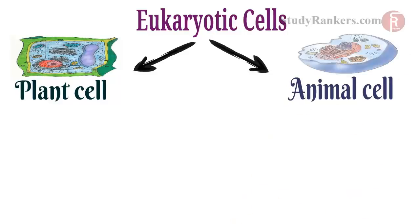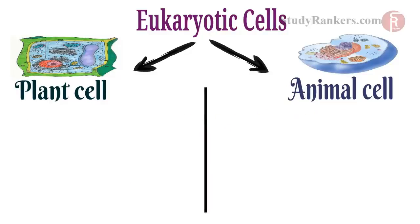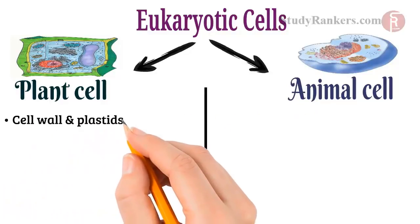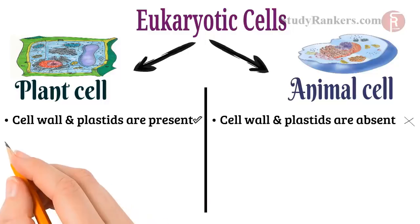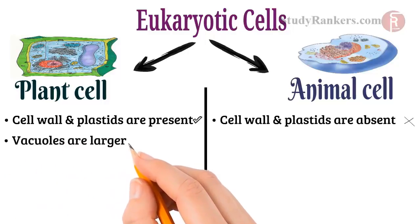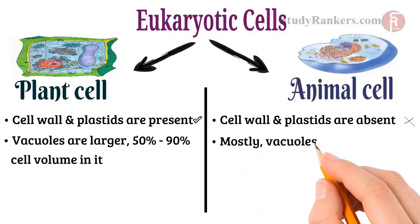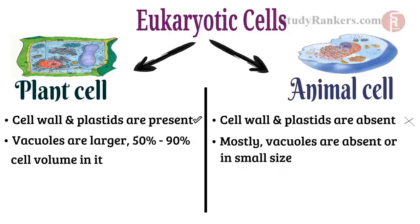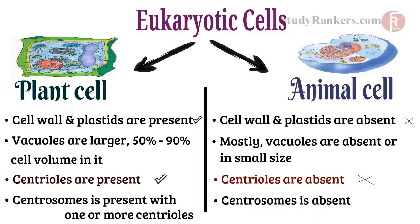Now we are going to differentiate between the characteristics of plant and animal cells. Cell wall and plastids are present in plant cells while absent in animal cells. Vacuoles are present and large in size, approximately 50% to 90% of cell volume in plant cells, but in animal cells vacuoles are mostly absent or small in size. Centrosomes are present in animal cells with one or two centrosomes, but in the case of plant cells, centrosome is absent.